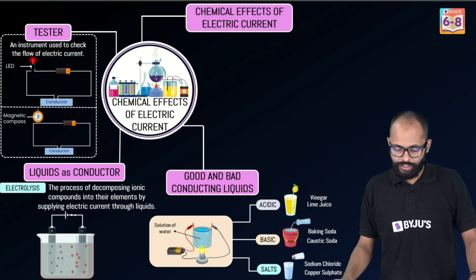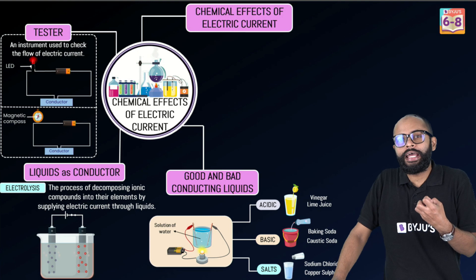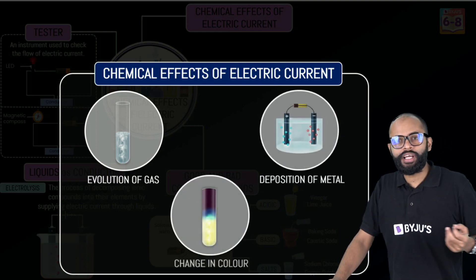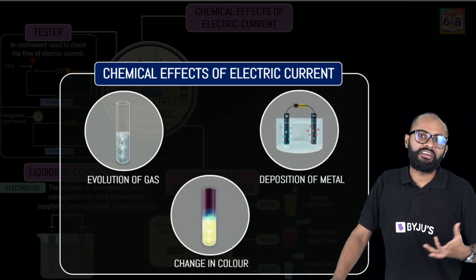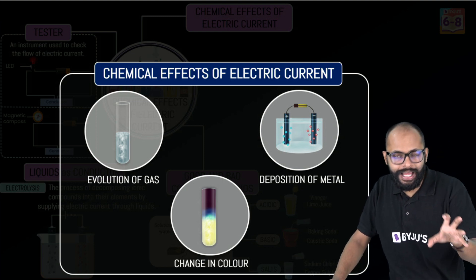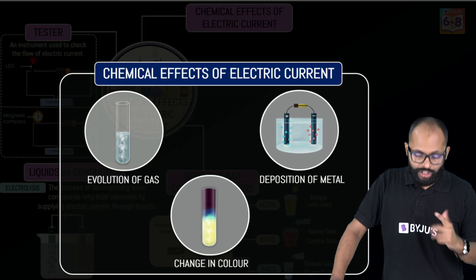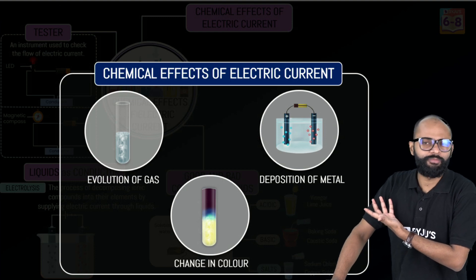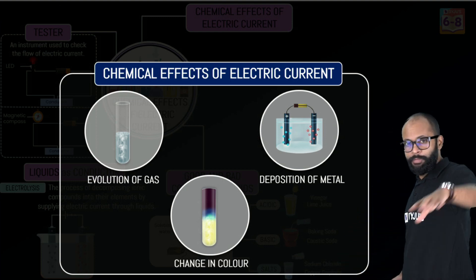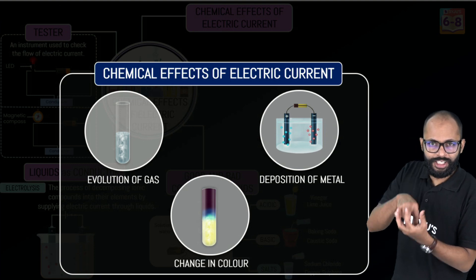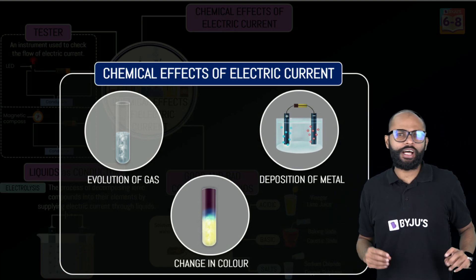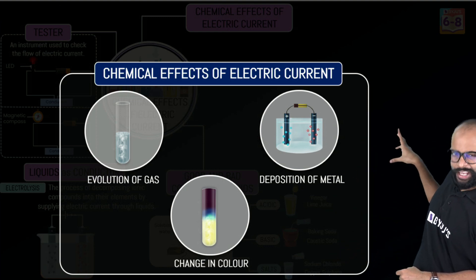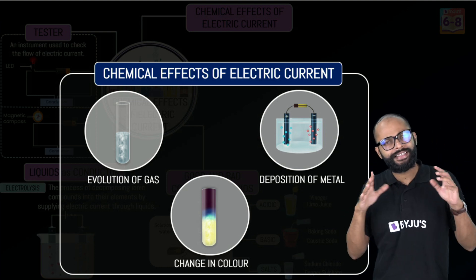What are the chemical effects you can see when electric current flows? First, there could be evolution of gases — for example, if you do electrolysis of water, you get hydrogen and oxygen. Second, there can be deposition of metal — we have a concept called electroplating, which is nothing but metal deposition. Third, there can be a change in color — remember the potato and electricity experiment where a green color appears? That is nothing but the chemical effect of electric current.